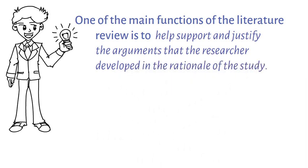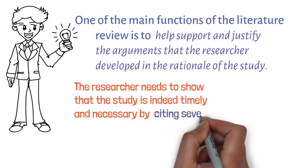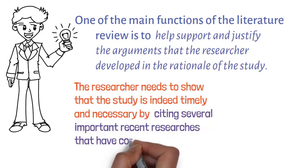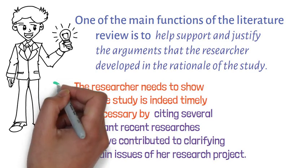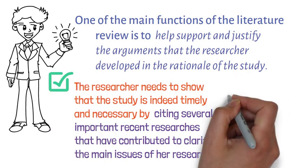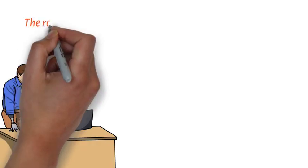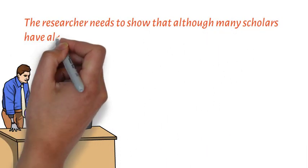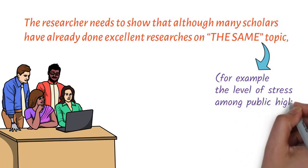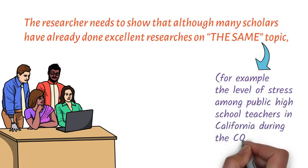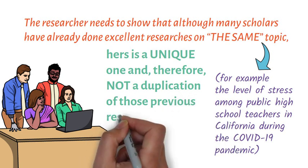Thus, in the literature review, the researcher needs to show that the study is indeed timely and necessary, by citing several important recent researches that have contributed to clarifying the main issues of her research project. If the researcher succeeds in doing this, then we can say that her study is indeed timely and necessary. However, the researcher also needs to show that, although many scholars have already done excellent researches on the same topic — for example, the level of stress among public high school teachers in California during the COVID-19 pandemic — hers is a unique one and therefore not a duplication of those previous researches.